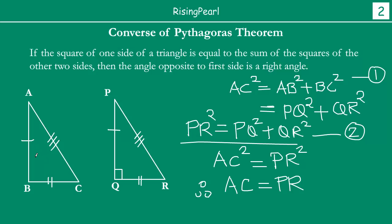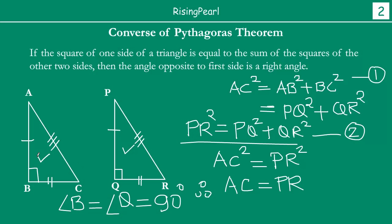Now, if you compare triangle ABC and triangle PQR, you will notice that all corresponding sides are equal. So we can say these two triangles are congruent. That means angle B must be equal to angle Q. And angle Q is 90 degrees, which means angle B is 90 degrees. By the SSS congruence rule, we can say these two triangles are congruent because: AB equals PQ by construction, BC equals QR by construction, and we have proved AC equals PR.